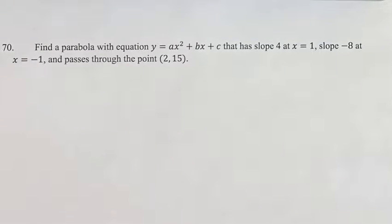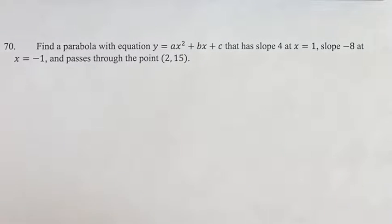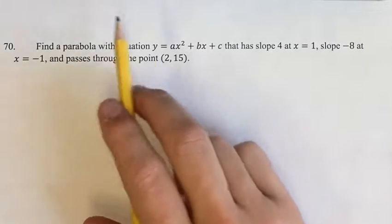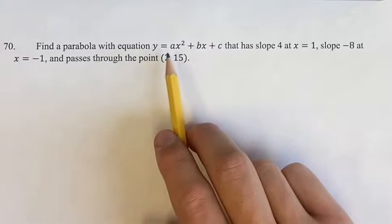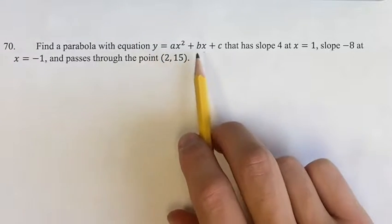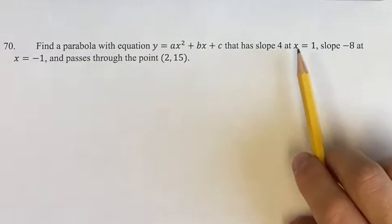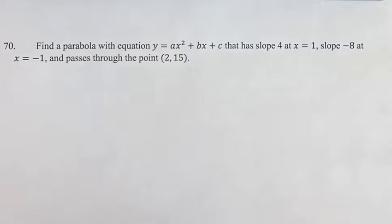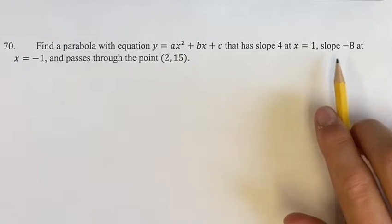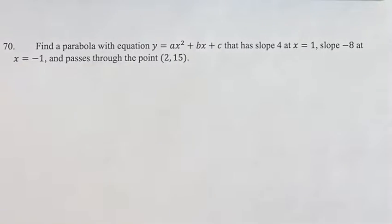Hello, and welcome back to another video. In this problem, we're told that we have a parabola y equals ax squared plus bx plus c. It has slope 4 at x equals 1, slope negative 8 at x equals negative 1, and it passes through the point (2, 15).